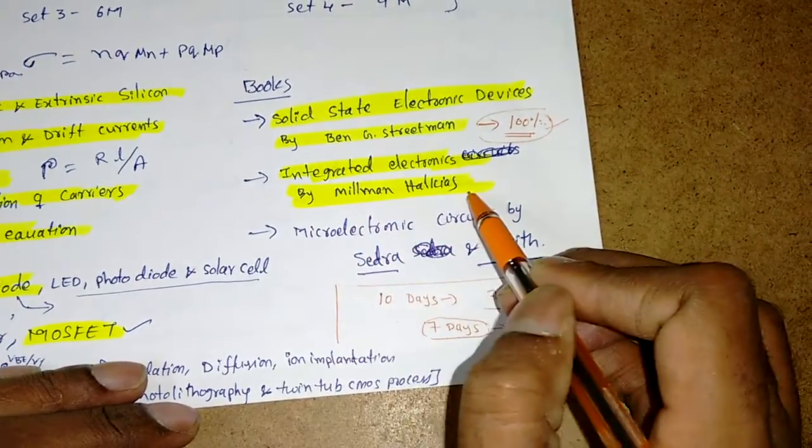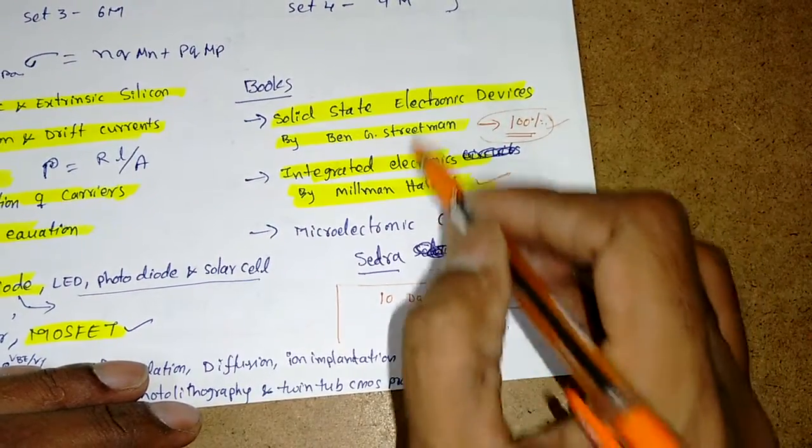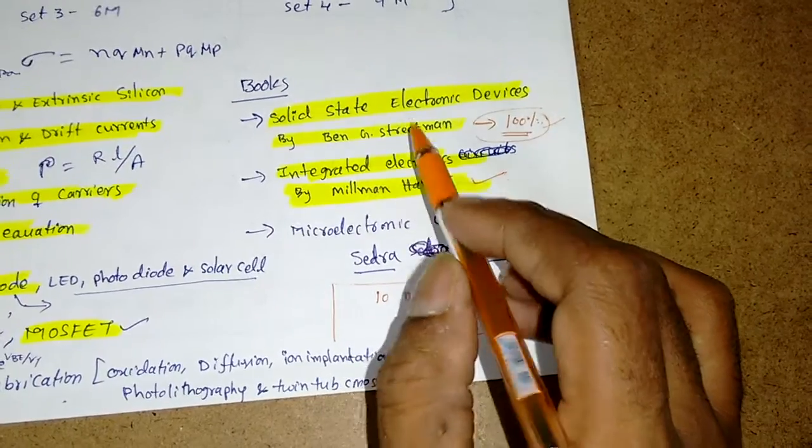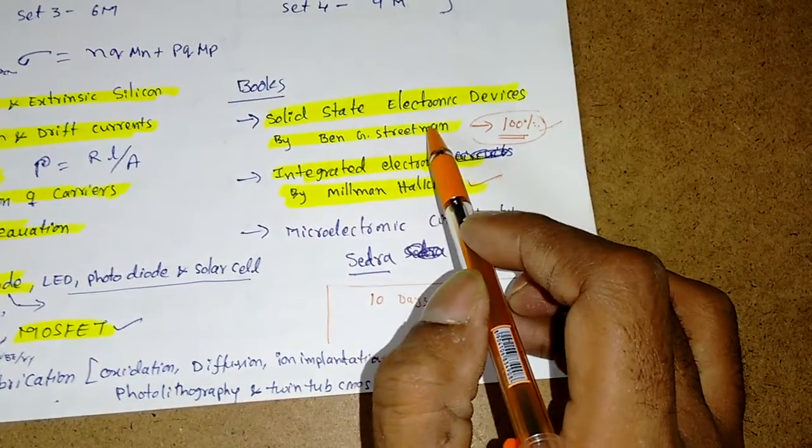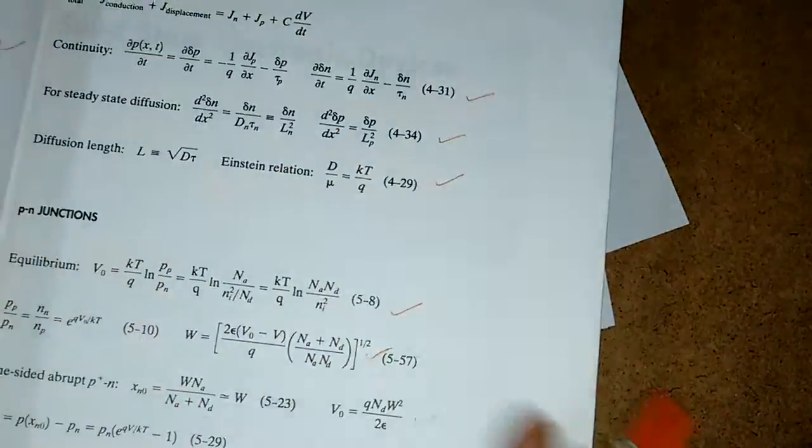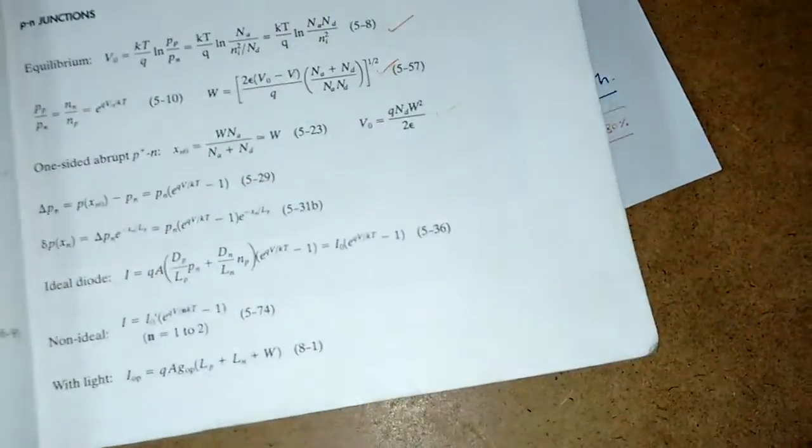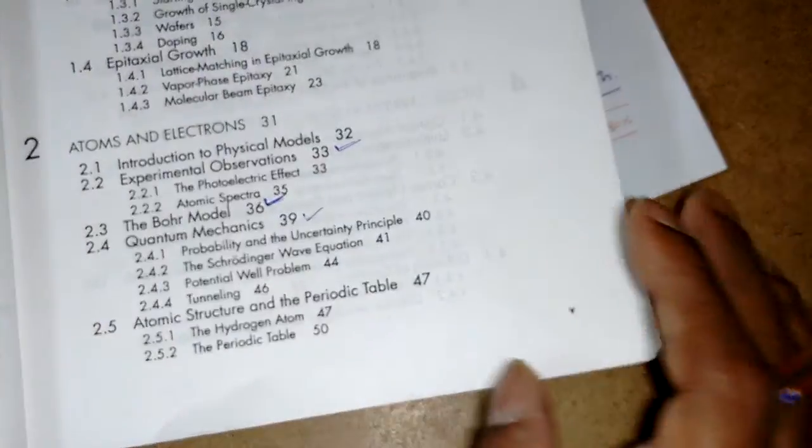The next preference book is Integrated Electronic Circuits by Millman Halkias. Both are approximately the same concept-wise, but my preference should be this one. What is the reason? If you see the book, this is Solid State Electronic Devices by Ben G. Streetman and Sanjay Kumar Banerjee.